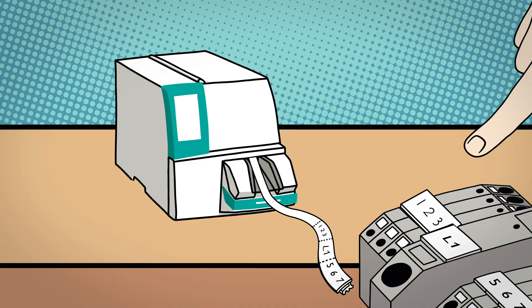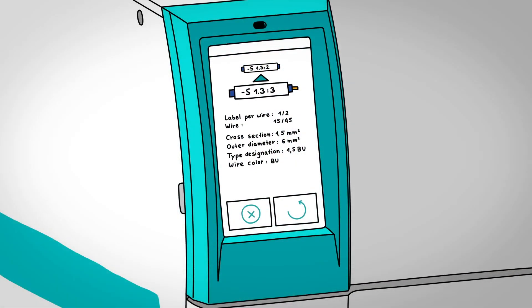The marking software guides the user step-by-step through the entire identification process. This occurs on both a desktop PC as well as via the printer display.